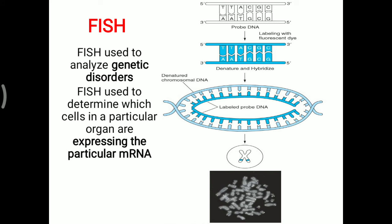One example is the Herceptin receptor. This receptor is expressed via DNA to mRNA and mRNA to receptor formation. Whether the mRNA for that receptor production is present or not can be detected with FISH. A particular probe for the Herceptin receptor is added, and if it attaches over the chromosome, it means the Herceptin receptor is present on the breast cancer cell. Treatment can then be given according to that Herceptin receptor — so FISH is useful not only for diagnosis but also for treatment.